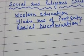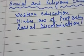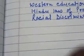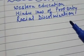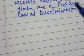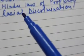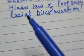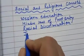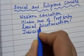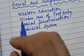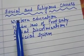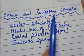They advocated a judicial system based on the principle of equality, but in actual practice it was biased — it was favoring the Britishers. So these were all the reasons behind social and religious causes.